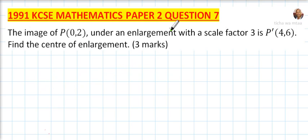1991 KCSE Mathematics Paper 2 Question 7. We are told the image of P(0,2) under an enlargement with scale factor 3 is P'(4,6). Find the center of enlargement. So to demonstrate how this is, we can say that is our P which is 0,2, then possibly we put our P' which is 4,6.